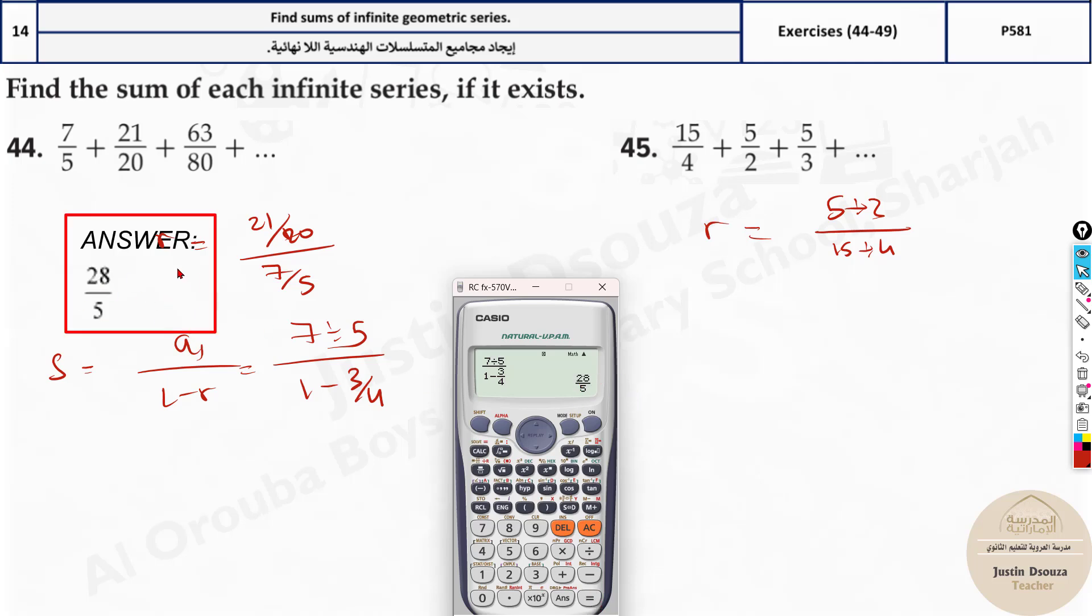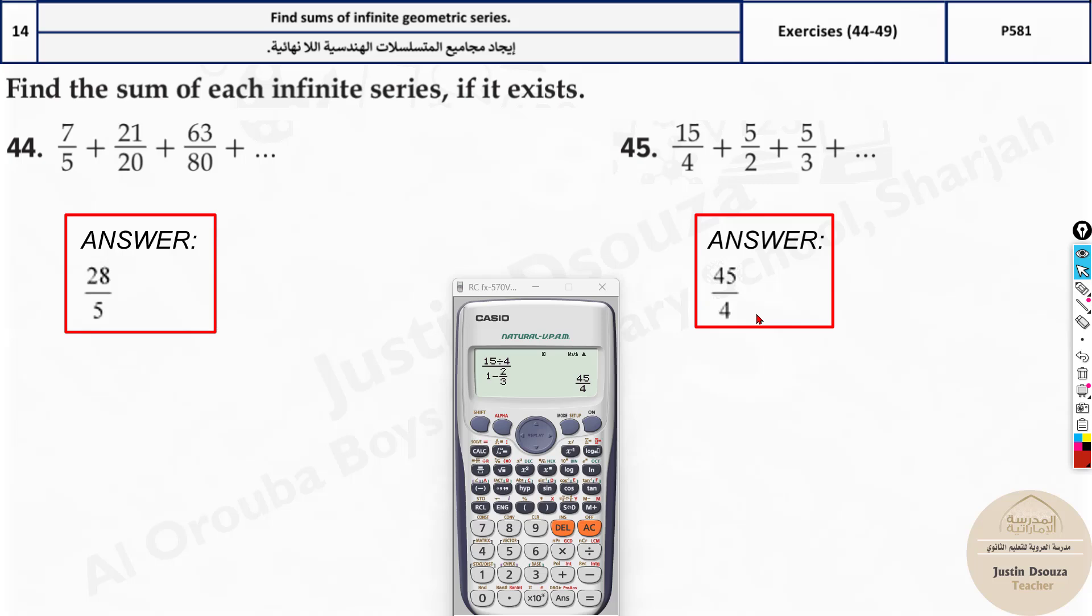Same thing over here, you can do it by yourselves now. Let's quickly do this. 5 divided by 2, that's 2.5, divided by 15, divided by 4. It's 2 thirds. Now all you need to do is 15 divided by 4, 1 minus 2 thirds, 2 fraction. When you're writing 1 minus, write it like this itself. It's much better. So answer is 45 by 4.